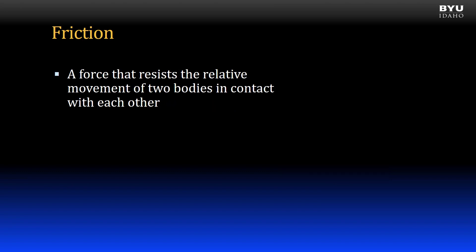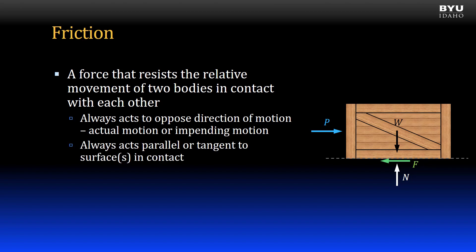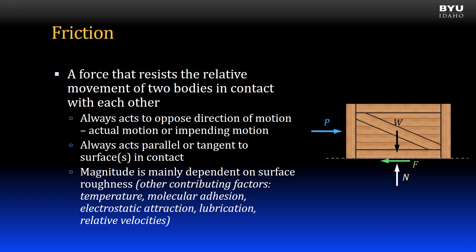Friction is a force that resists the relative movement of two bodies in contact with each other. Friction always acts to oppose the direction of motion — either actual motion or impending motion. Friction always acts parallel or tangent to the surfaces in contact. The friction force magnitude is mainly dependent on the surface roughness, though there are other contributing factors.